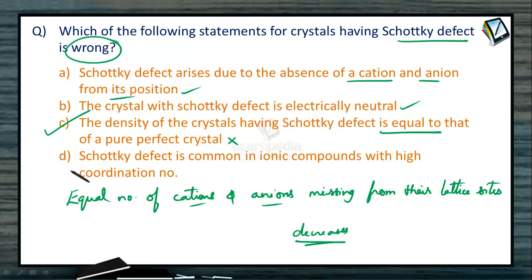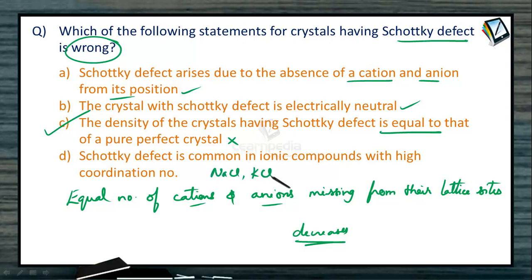The fourth statement describes a characteristic of Schottky defect: it is common in ionic compounds with high coordination number and also when there is less difference between the size of cations and anions, like NaCl, KCl, KBr, etc. So these three statements are correct, and the density statement is the wrong one, which is our answer.